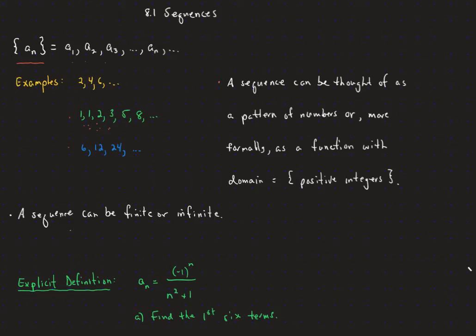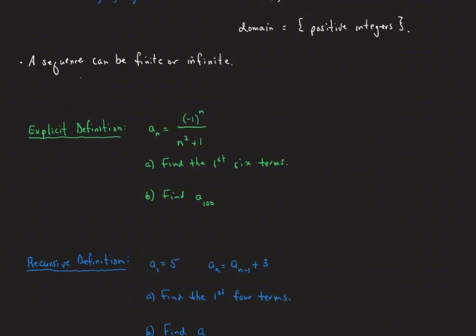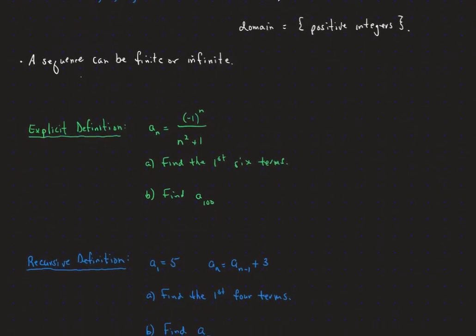In general, a sequence can be thought of as a pattern of numbers, or more formally as a function whose domain is the positive integers. The first term is called a sub 1, though sometimes we start at 0 and call it a sub 0. A sequence can be either finite or infinite. One way of defining sequences is known as an explicit definition — a formula for how to find any term we want.